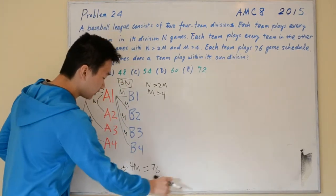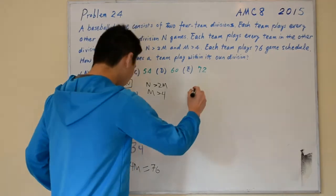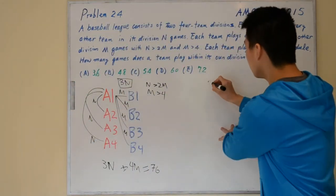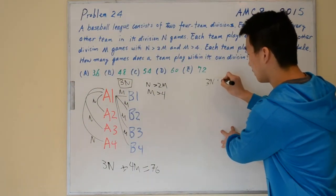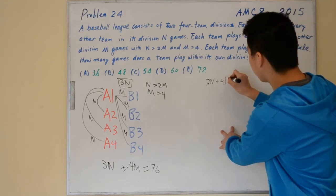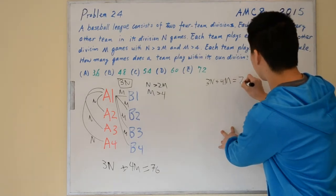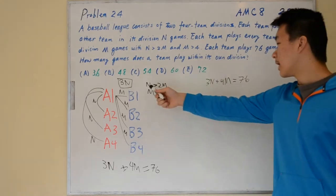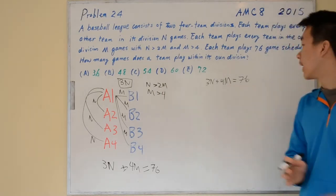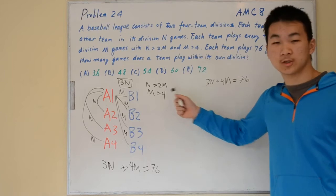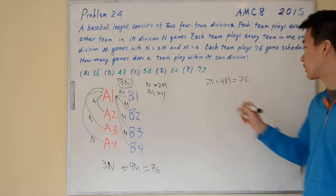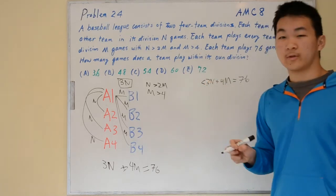Let's rewrite this equation: 3N plus 4M equals 76. We know that N is greater than 2M, so we can substitute 2M into here as long as we account for the inequality.